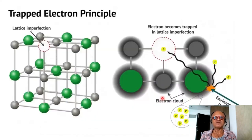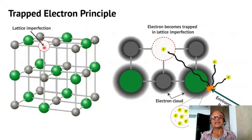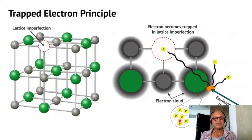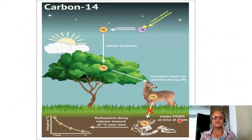There is the trapped electron principle where crystalline structures can have trapped electrons which show up as lattice imperfections — the electron becomes trapped in the lattice imperfection. Environmental radiation can create a signature trapped in the material, and when artifacts are found in the lab, it can be figured out as to when that particular trapping happened.